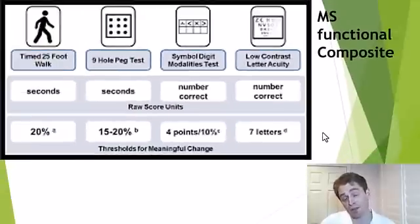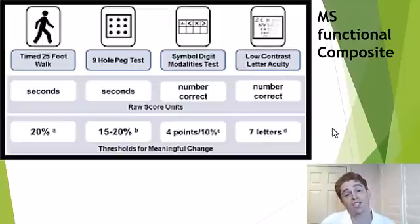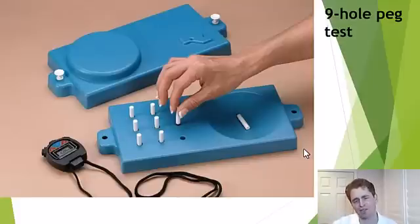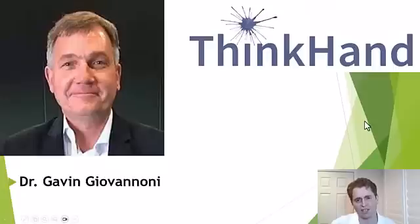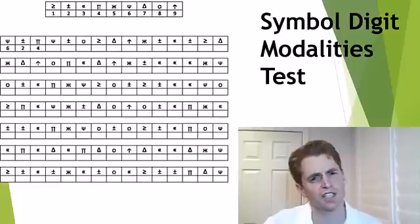I believe a better outcome would be composite disability outcomes, such as the MS Functional Composite. It consists of four different tests, all very clinically relevant: one measuring walking, one measuring hand dexterity, one measuring cognitive function, and one measuring visual ability, simply added together to create an overall composite score. The nine-hole peg test — where you take little pegs, put them into holes, and put them back in the bin as fast as possible — is an excellent measure of hand strength and dexterity. Professor Gavin Giovannoni coined the hashtag #ThinkHand: even people with advanced MS who may not have walking ability still want to preserve their upper extremity function.